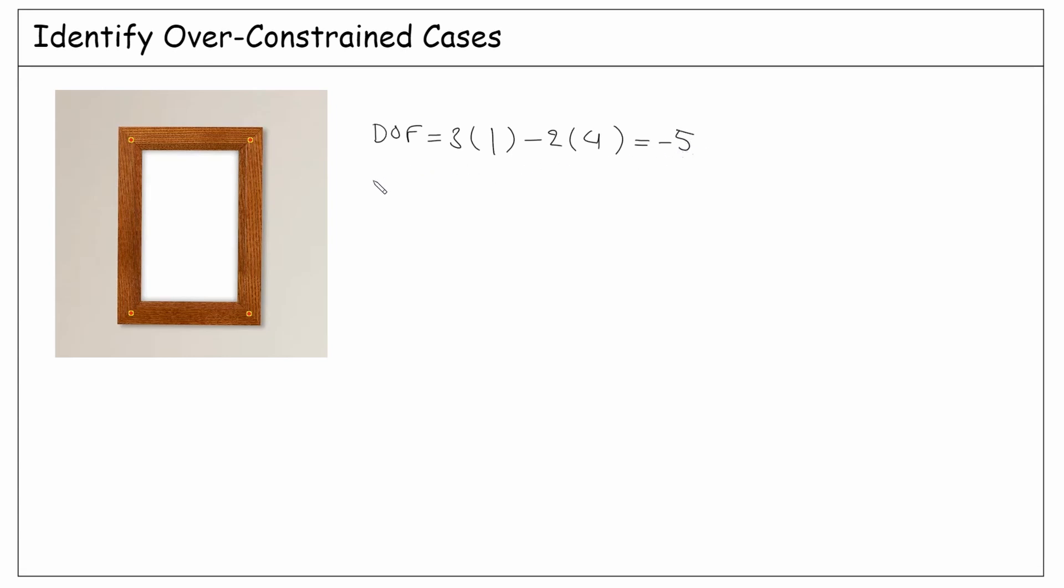This example demonstrates that the formulation we are using does not always work. Notice that in the world of rigid bodies, a negative degrees of freedom is meaningless, and the minimum value for the degrees of freedom is zero.